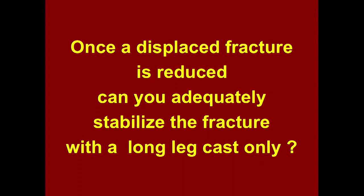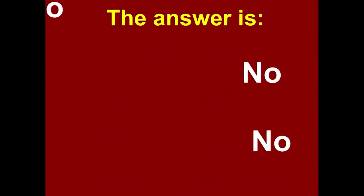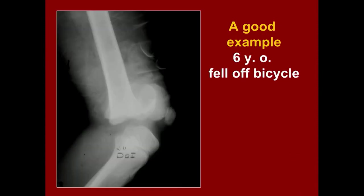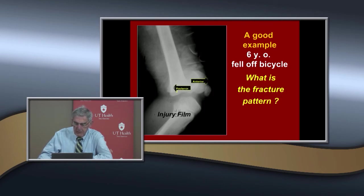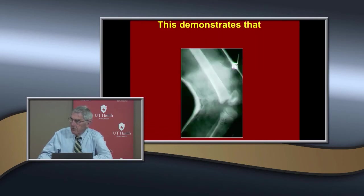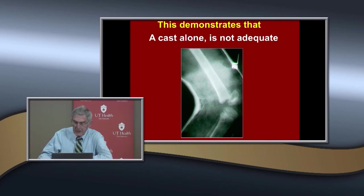Once the fracture is reduced, can you adequately stabilize it with a long leg cast alone? No — a cast alone is not adequate. Here's a six-year-old who fell off a bicycle with an anteriorly displaced distal physeal fracture, probably Salter-Harris 1 or 2. An attempt at closed reduction in a cast failed to hold the position — confirming that a cast alone is inadequate.